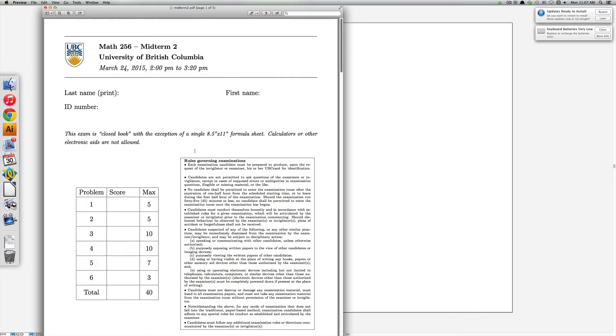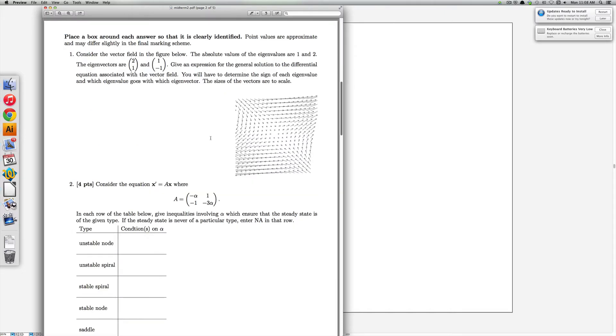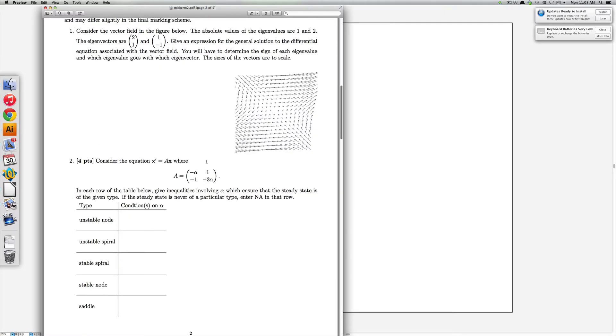In this video I'm going to talk about question 2 from midterm 2 and Math 56 from March 2015. That question asks you to analyze the system of equations given by x prime equal Ax, where the matrix A is given by this expression.